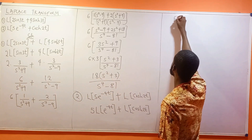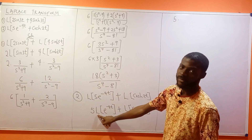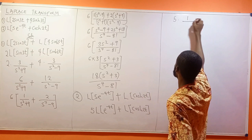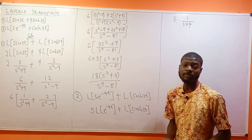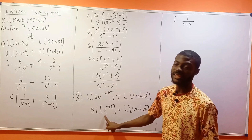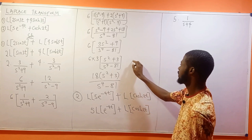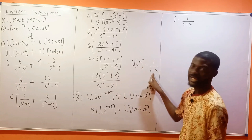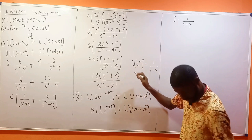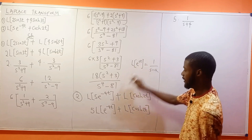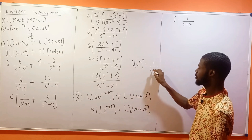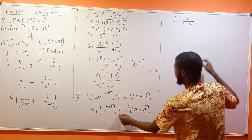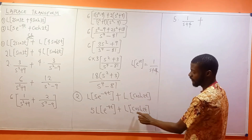The Laplace transform of e^(-4t) gives 1 over s plus 4. Remember the standard result: the Laplace transform of e^(at) is always 1 over s minus a. Since we have minus 4 here, substituting gives s minus (minus 4), which becomes s plus 4. That's how we get 1 over s plus 4.